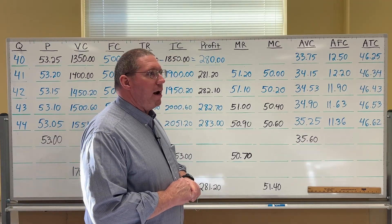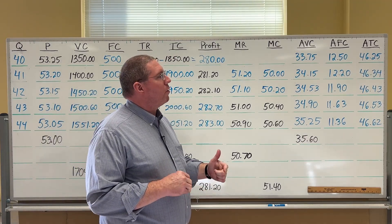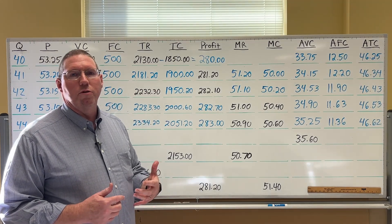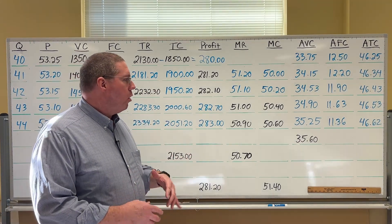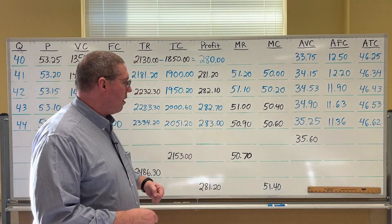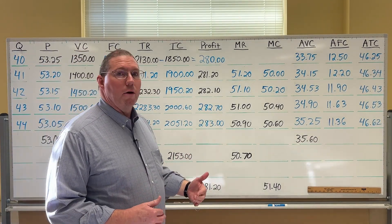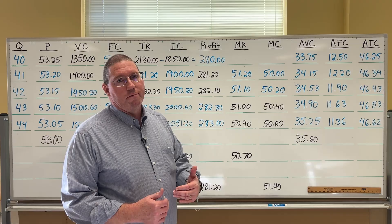That's it for average cost and revenue. In the next lesson, we're going to bring it all together, finish up the last four rows, and talk about profit maximization.